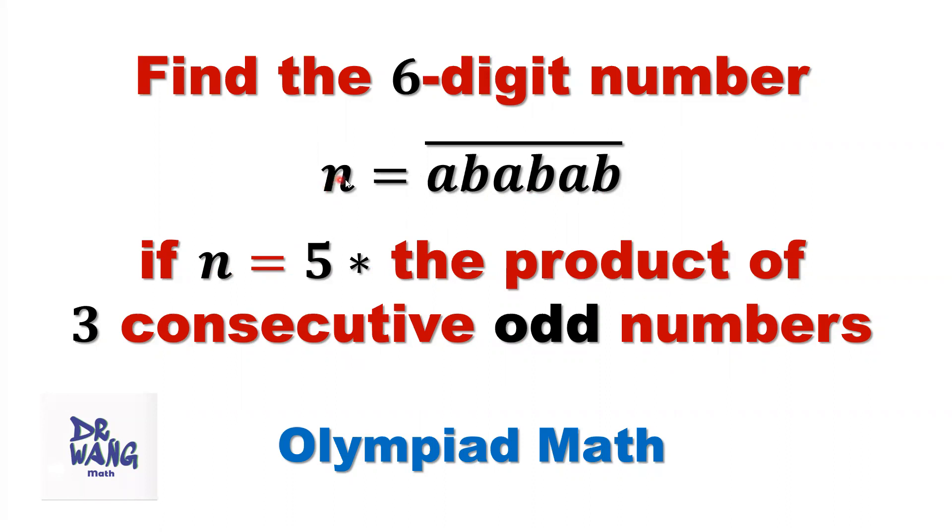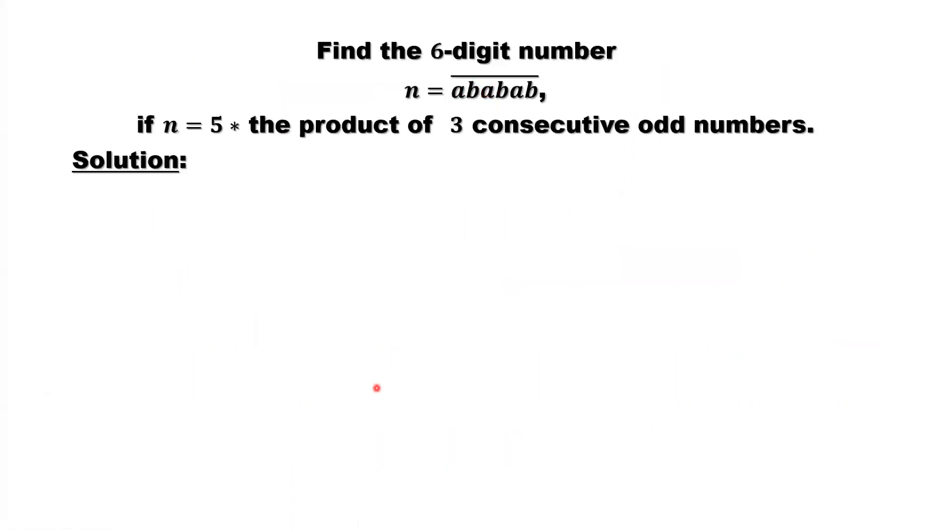Here N, we have ABABAB repeating three times. We want to rewrite N into three pieces, the sum of three pieces. So here, because you can see the pattern ABABAB, we can see the first AB.